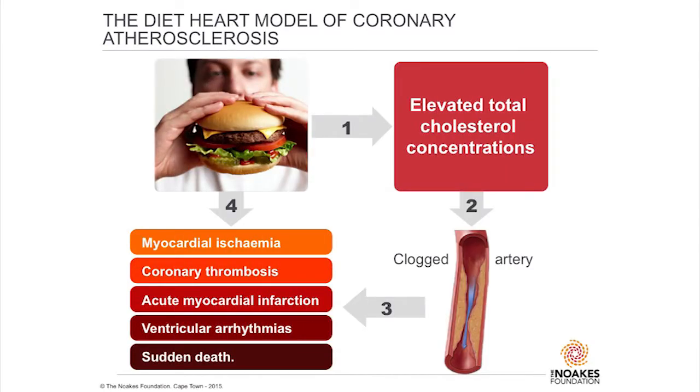These four steps have not been proven. For clarification: myocardial ischemia, coronary thrombosis, acute myocardial infarction, and ventricular arrhythmia are the heart diseases that occur when a clogged artery ruptures. A clogged artery by itself doesn't cause those things — it's a ruptured artery that causes those problems. The rupture is when the plaque ruptures.